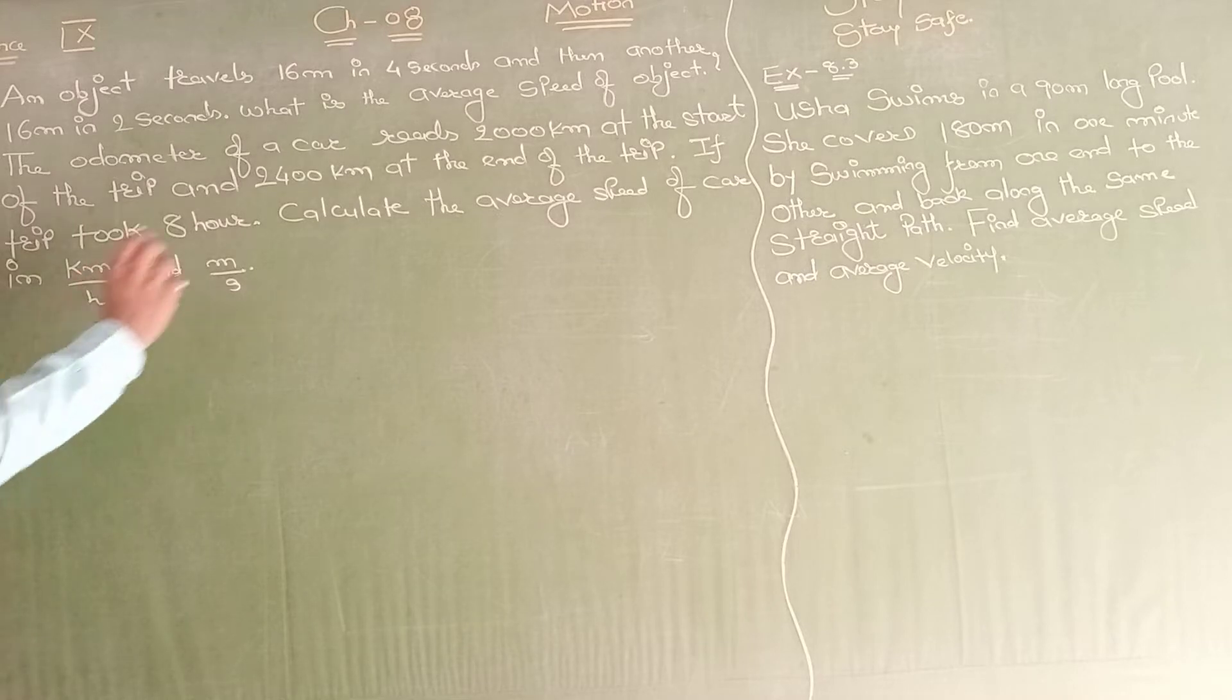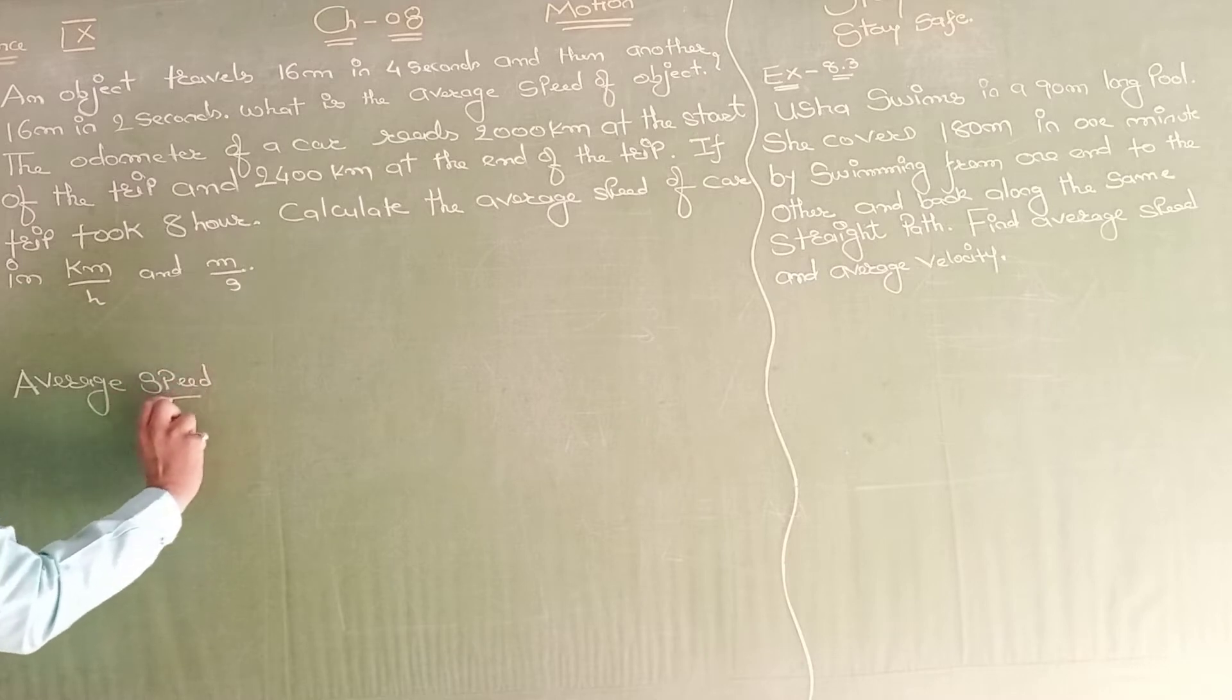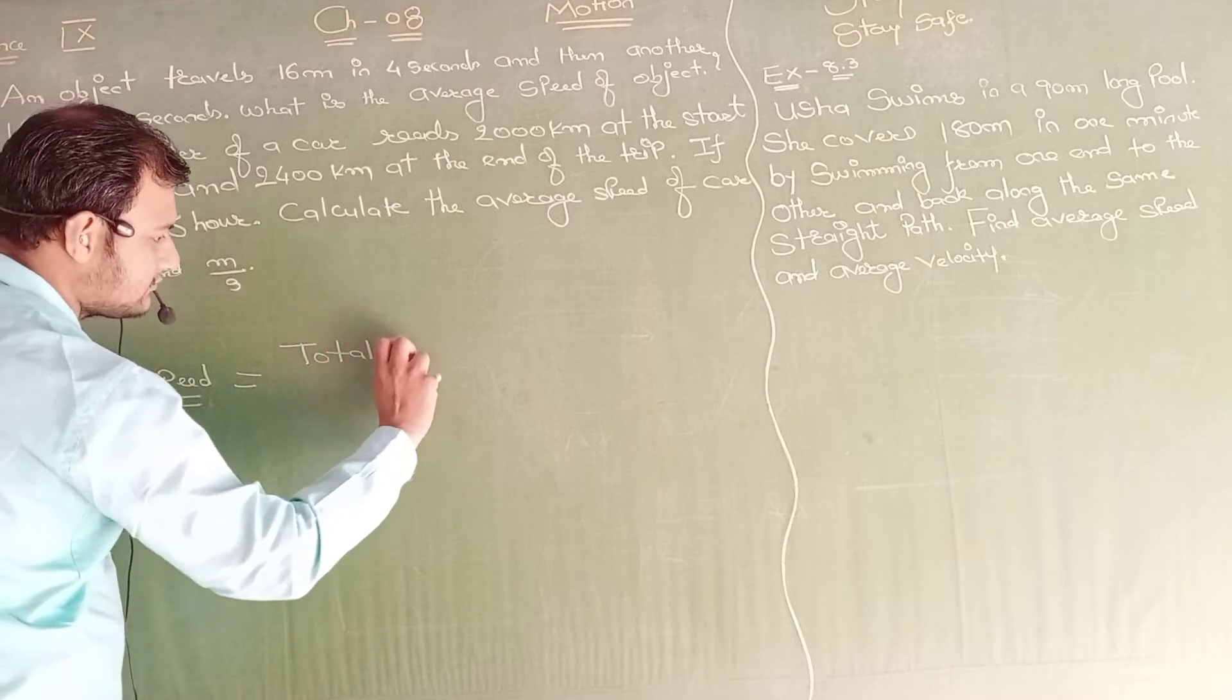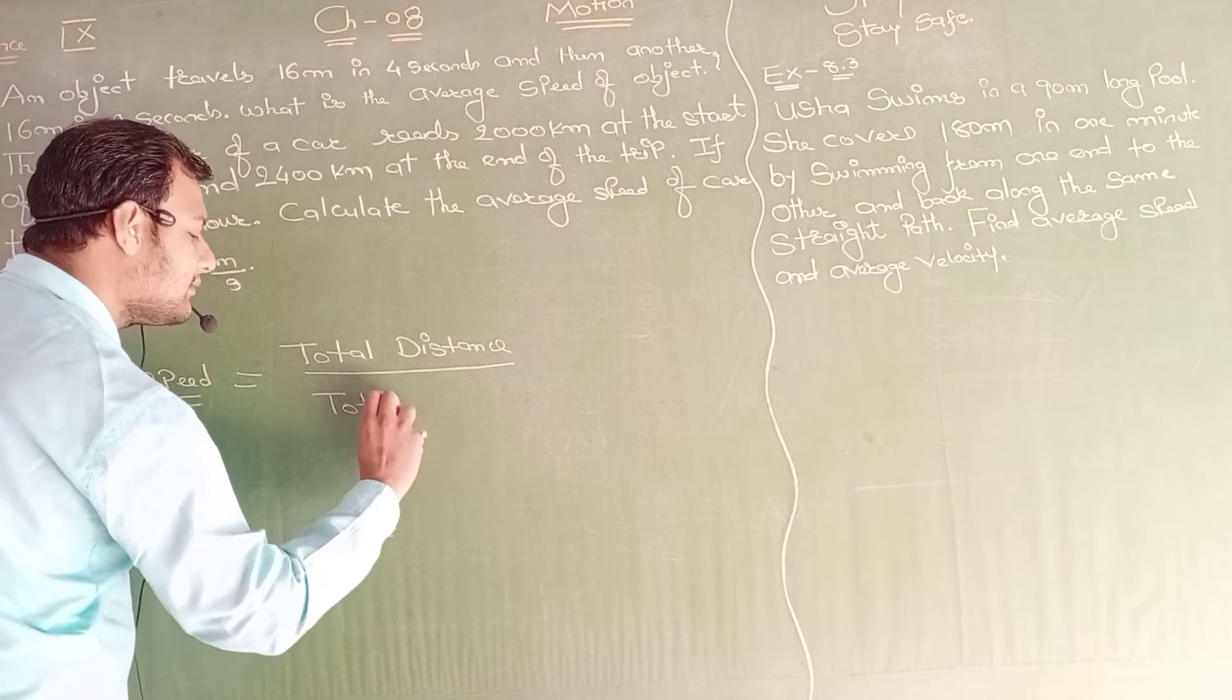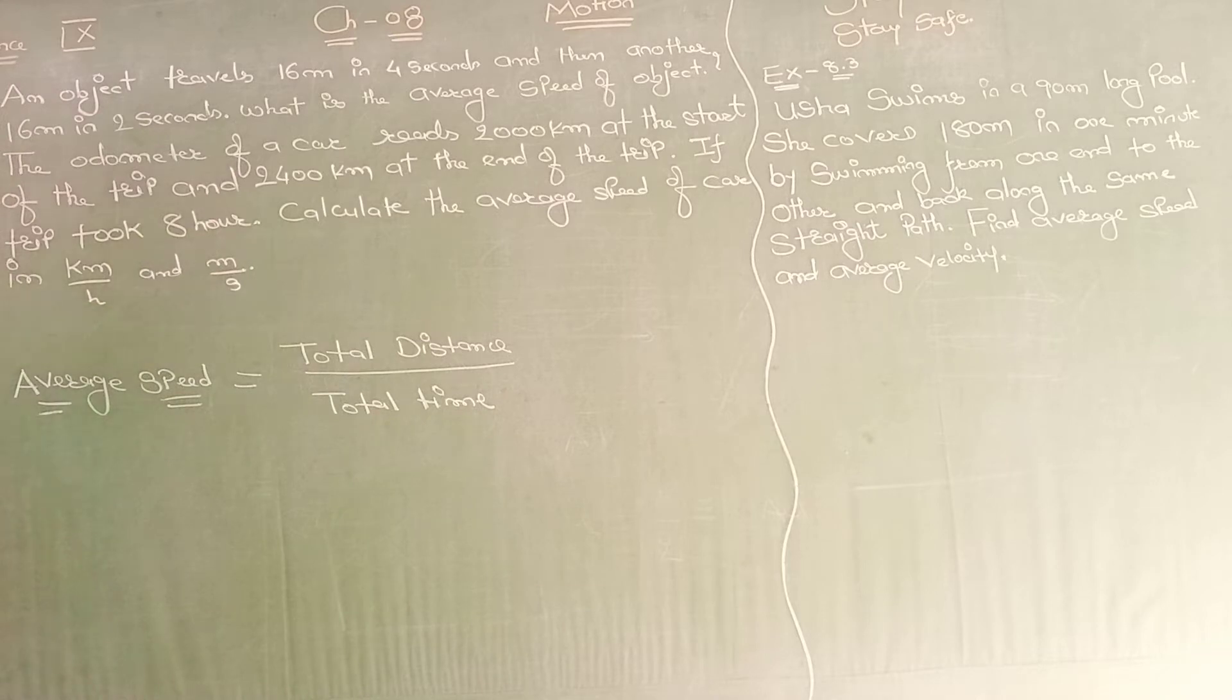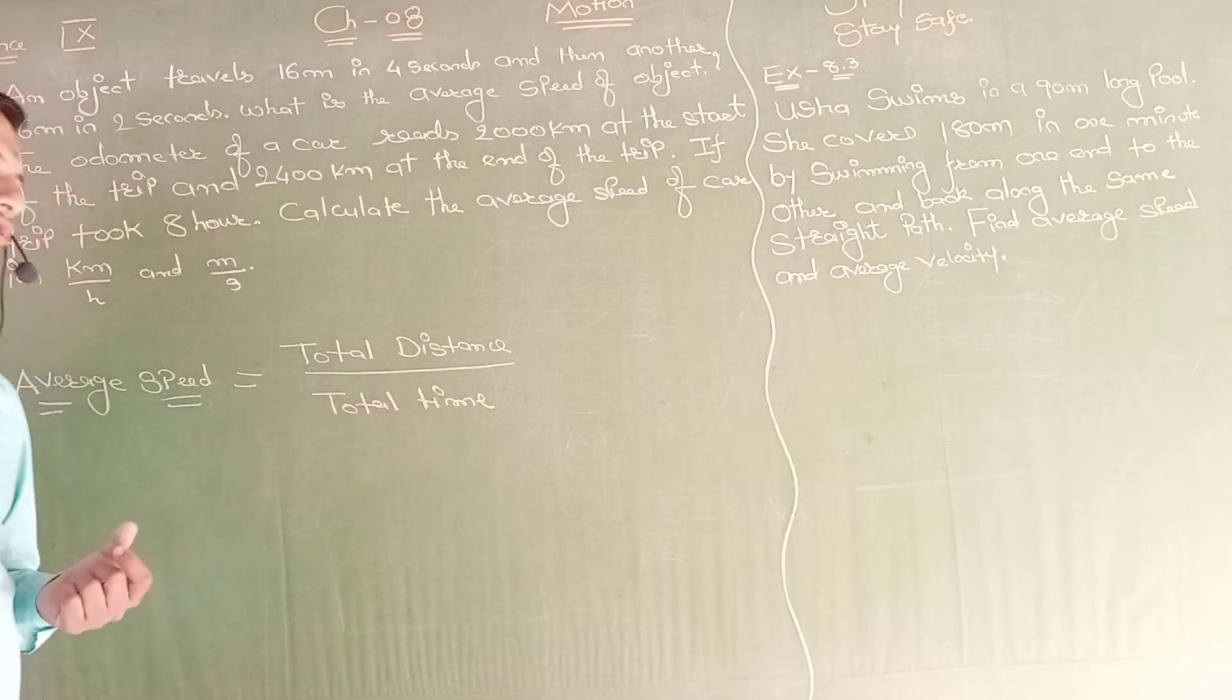Dear students, before discussing these examples, let me recall a simple concept that is average speed. What is speed? Speed means total distance traveled in total time. This is the formula of speed. Average speed equals total distance travel by total time.